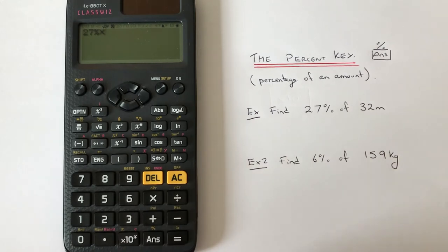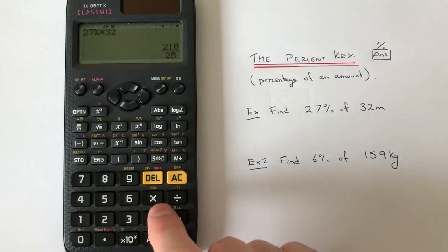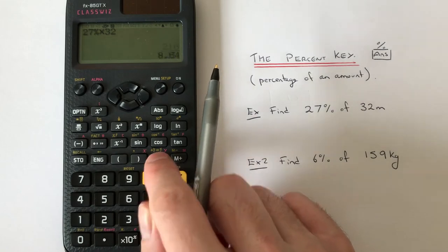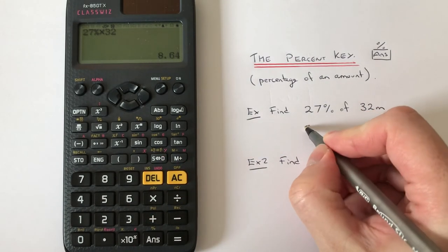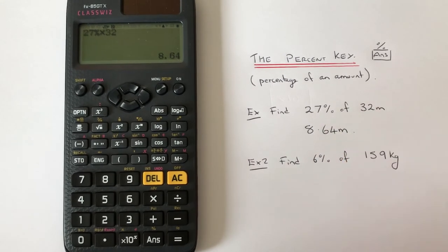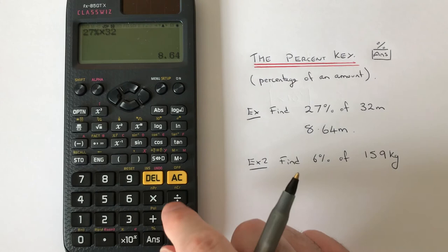...times instead, and then we type our number in next. It gives us the answer as a fraction first, but if you want a decimal answer you just press that S⇔D key. We get an answer of 8.64 meters. Let's have a look at example 2. I've got to work out 6% of 159 kilograms.